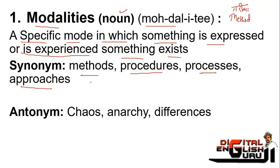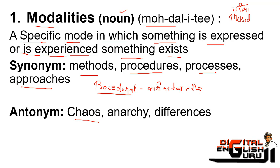One related word is 'procedural,' which is called procedural — meaning related to methods. The antonyms of modalities are chaos and anarchy. Anarchy means a state where no order exists. 'Differences' also carries a similar meaning — where things are disorganized and no complete method is followed.